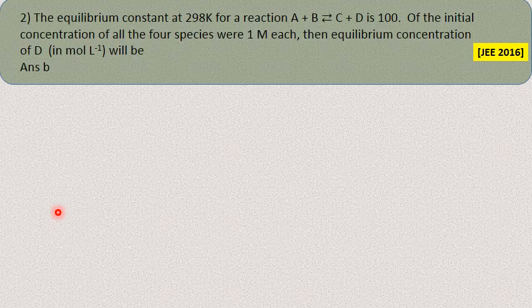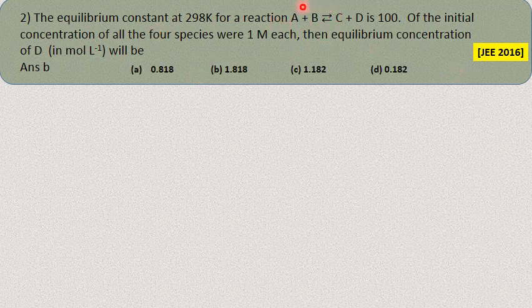Next question: the equilibrium constant at 298 K for the reaction A + B → C + D is 100. If the initial concentration of all species was 1 mole each, then the equilibrium concentration of D in mol/L will be how much? They have given initial concentrations of A, B, C, D all as 1 mole, and the equilibrium constant Kc = 100. We need to find the equilibrium concentration of D.